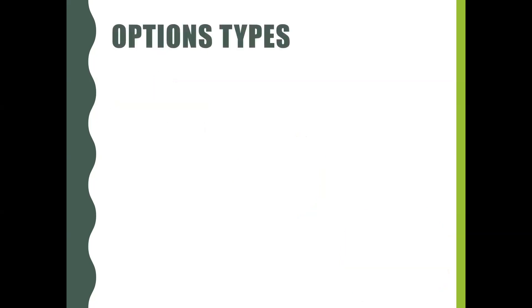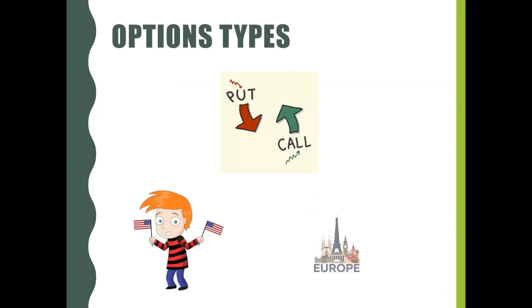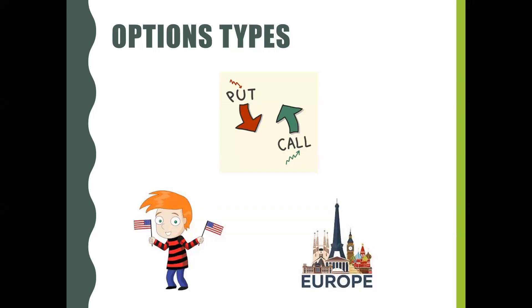Types of Options: Key types of options are Call Option, Put Option, American and European Option. Call Option is an option to buy — the buyer of a call option has the right but not the obligation to buy the underlying asset.